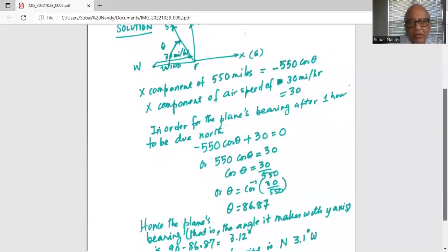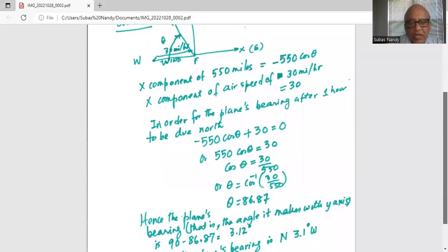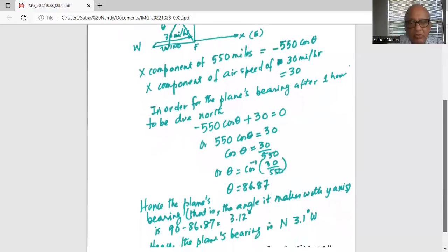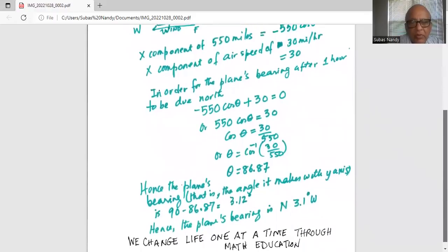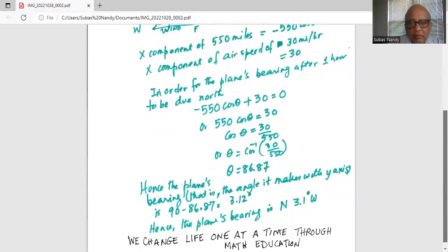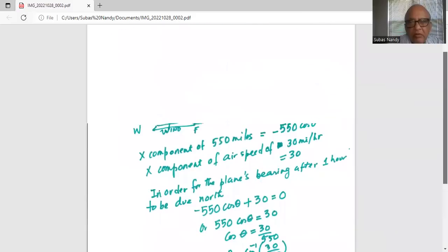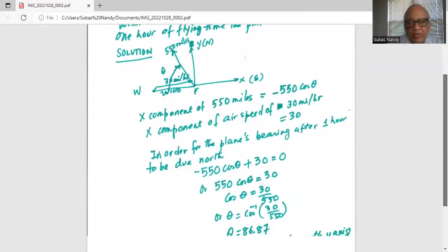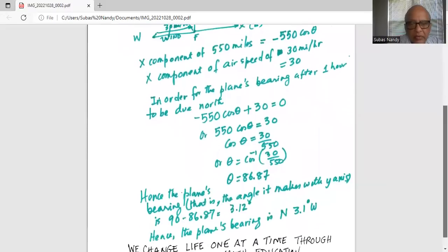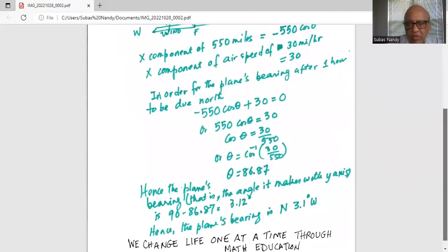Hence the plane's bearing, that is the angle it makes with the y-axis, is 90 minus 86.87 which is 3.12. Hence the plane's bearing is north 3.1 degrees west. The bearing is inclined towards the west by 3.1 degrees. So I'll stop here today.